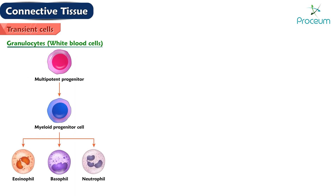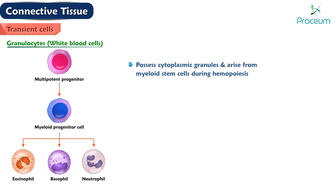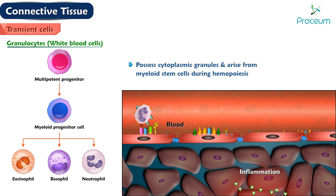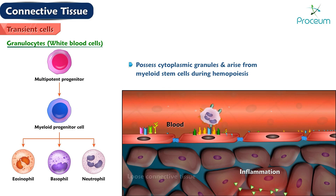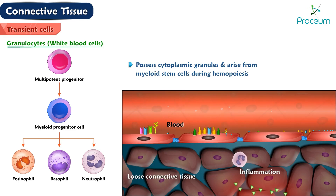Granulocytes are white blood cells that possess cytoplasmic granules and arise from myeloid stem cells during hemopoiesis. At sites of inflammation, they leave the bloodstream and enter the loose connective tissue. These cells include neutrophils, basophils, and eosinophils.